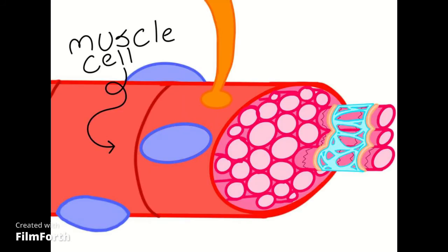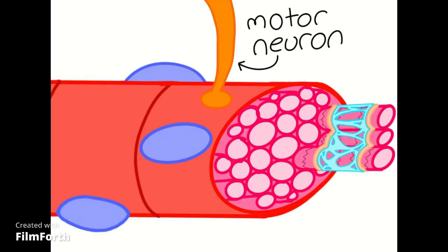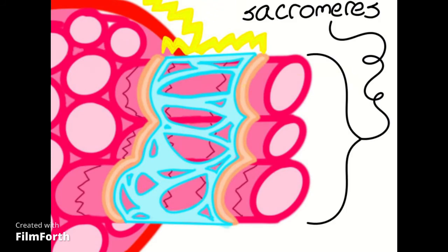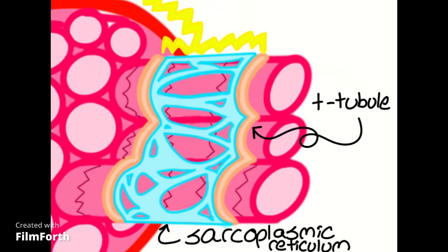Looking at a muscle cell, you can see that there is a motor neuron running to it. When your brain sends a signal down through the motor neuron, it spreads throughout the muscle cell. The sarcomeres have another organelle that stretches across them called the sarcoplasmic reticulum.